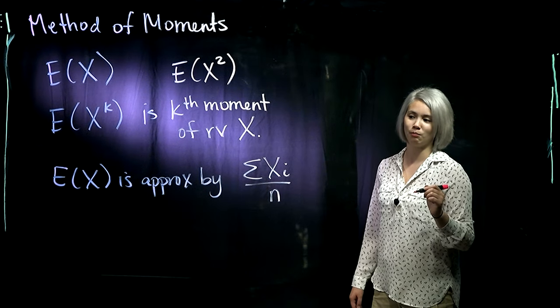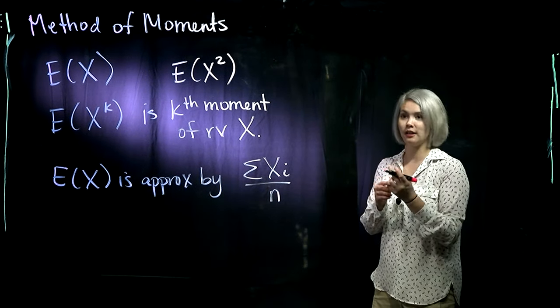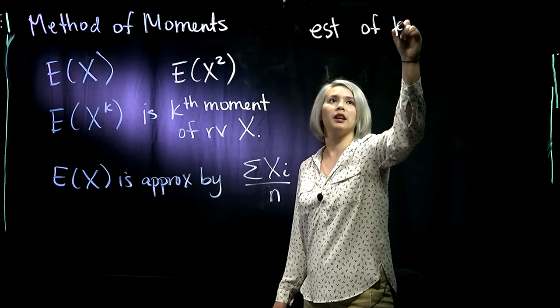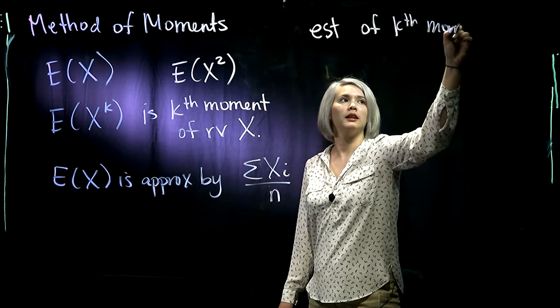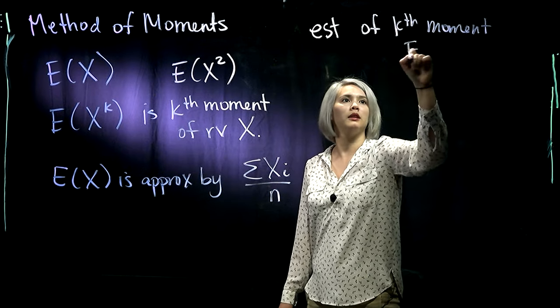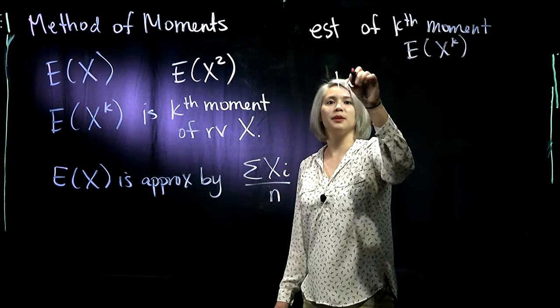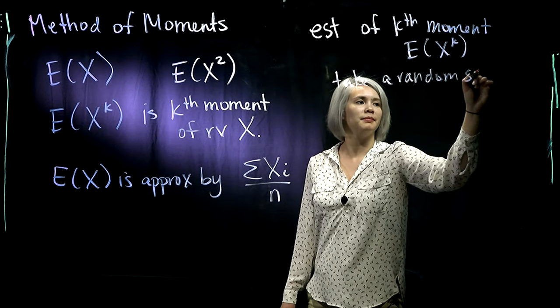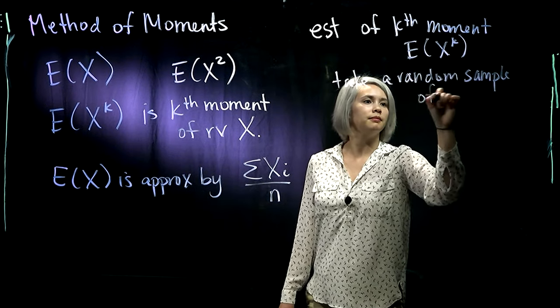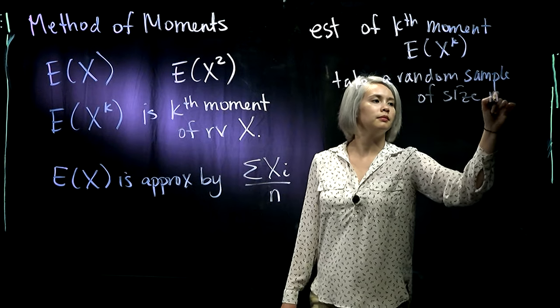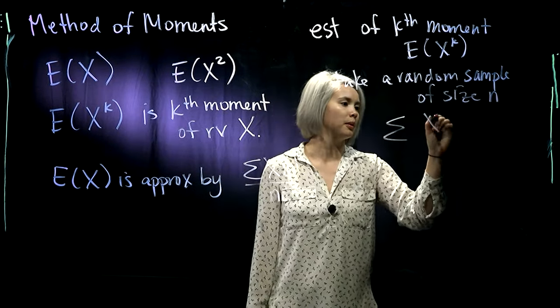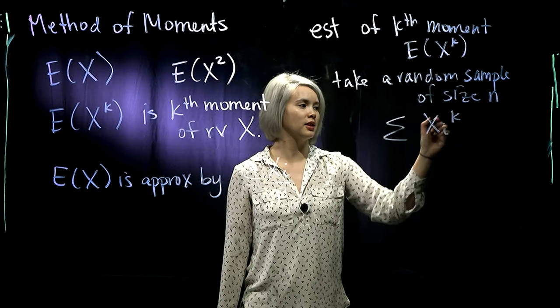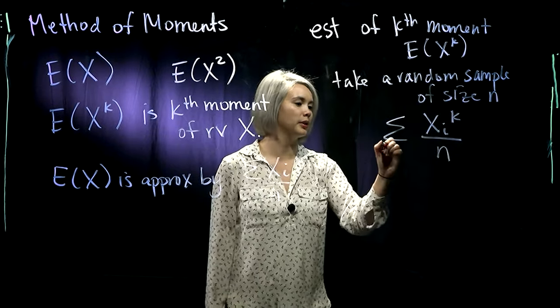More generally, if we want to find the estimate of the k-th moment, we can take a sample of size n and then sum up each X to the K and divide by the sample size.